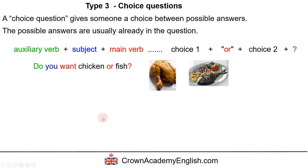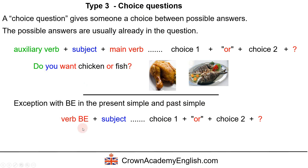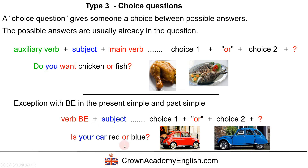And of course we have the same exception with the verb 'be' as a main verb in the present simple and past simple. The form is the same but without the auxiliary verb, and the order is: verb be, subject, choice one or choice two. For example, 'Is your car red or blue?' — 'is' is the verb be, 'your car' is the subject, and 'red or blue' are the choices. The answer would be 'My car is red' or 'My car is blue.'